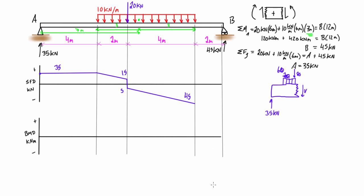In the final region there's nothing changing, so the shear carries straight across to support B, ending at negative 45 kN. We verify this by sectioning from the right: we have 45 kN pressing up from the reaction, and the internal shear must have a magnitude of 45 kN in the negative sense — which matches. This is a really important check. If you're not matching up here, you've likely made a mistake. The result must be the same regardless of which side you draw the free body diagram from.